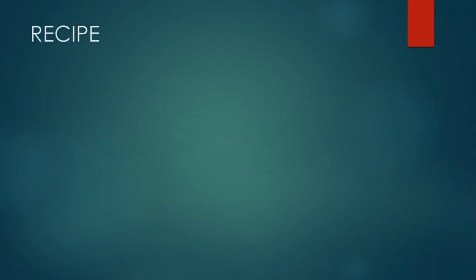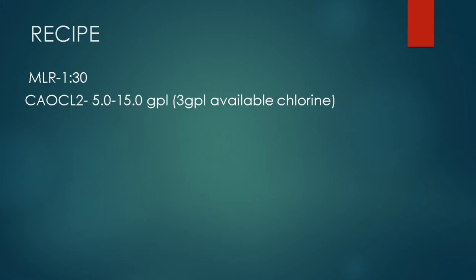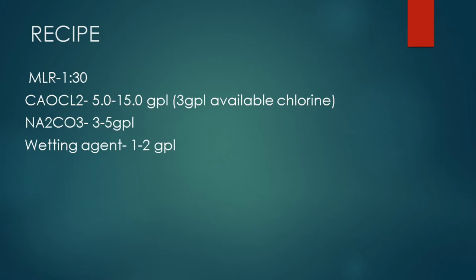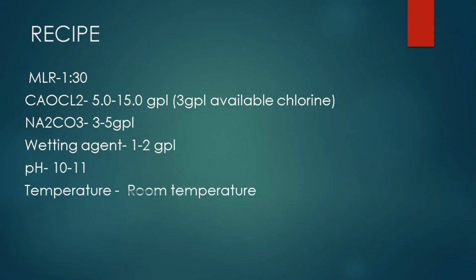The recipe for calcium hypochlorite bleaching is: MLR 1:30, calcium hypochlorite 5–15 GPL, with 3 GPL available chlorine to be maintained. Sodium carbonate 3–5 grams per liter, wetting agent 1–2 GPL, pH to be maintained at 10–11, temperature at room temperature, and the time for this process is 60–90 minutes.